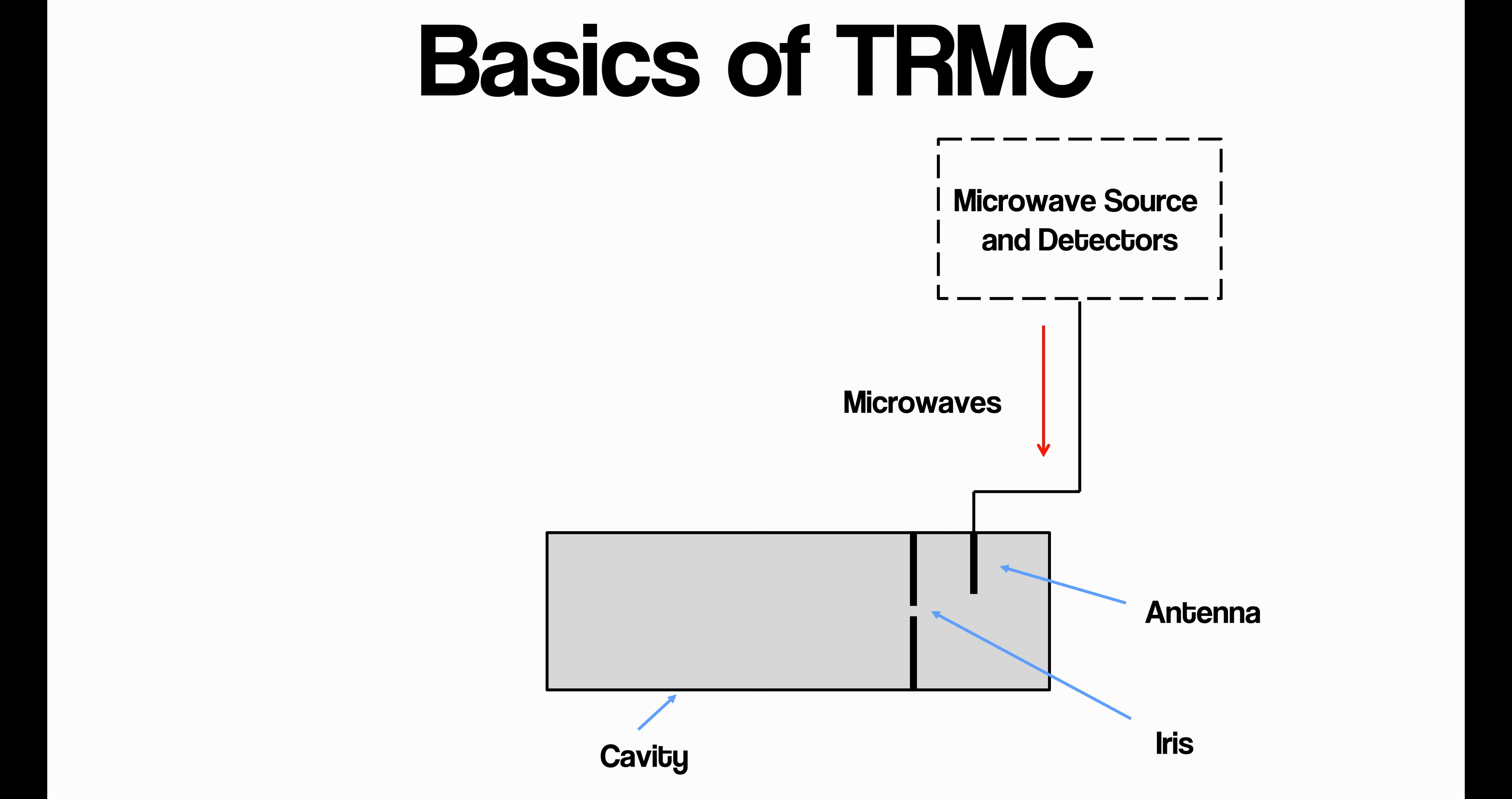So one good way of thinking about TRMC is to think about it in terms of light. You can imagine, because light is essentially the same thing, just a different frequency. You can imagine that you have light being passed through this iris, and then it's inside this cavity. And if all of the sides are reflecting, you can think of them as being mirrors for the light analogy, you can imagine the light bounces backwards and forwards. And that's exactly what happens.